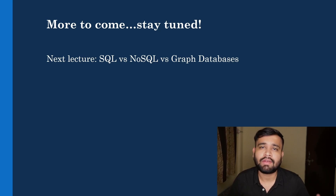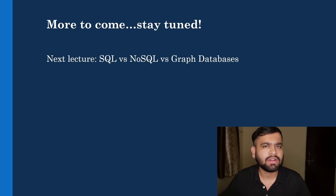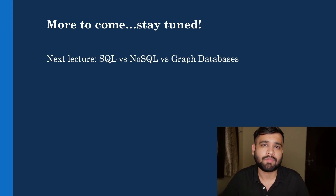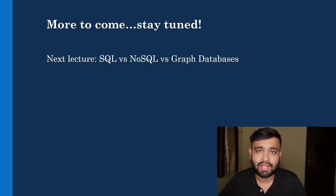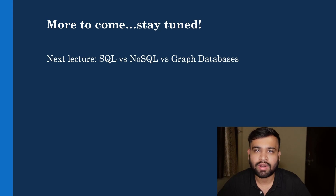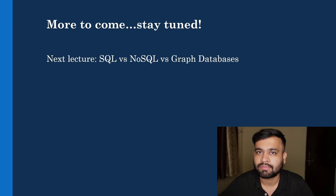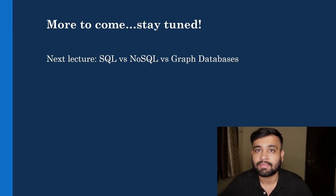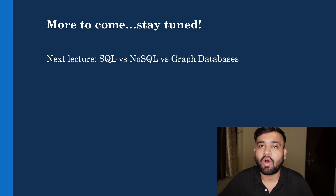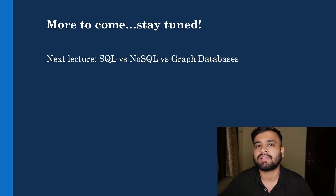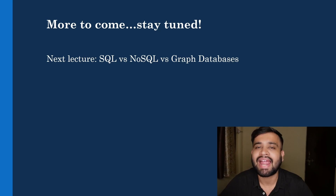That's all for today's lecture. We discussed all about graph databases — how data is represented in graph databases, some of the most popular graph databases in the world, their benefits, and how they help organizations build their data model in this world of agile development. If you have any difficulties understanding it, let me know in the comments. In the next lecture, we are going to compare SQL, NoSQL, and graph databases in depth — their differences as well as similarities. Stay tuned and subscribe to the channel.